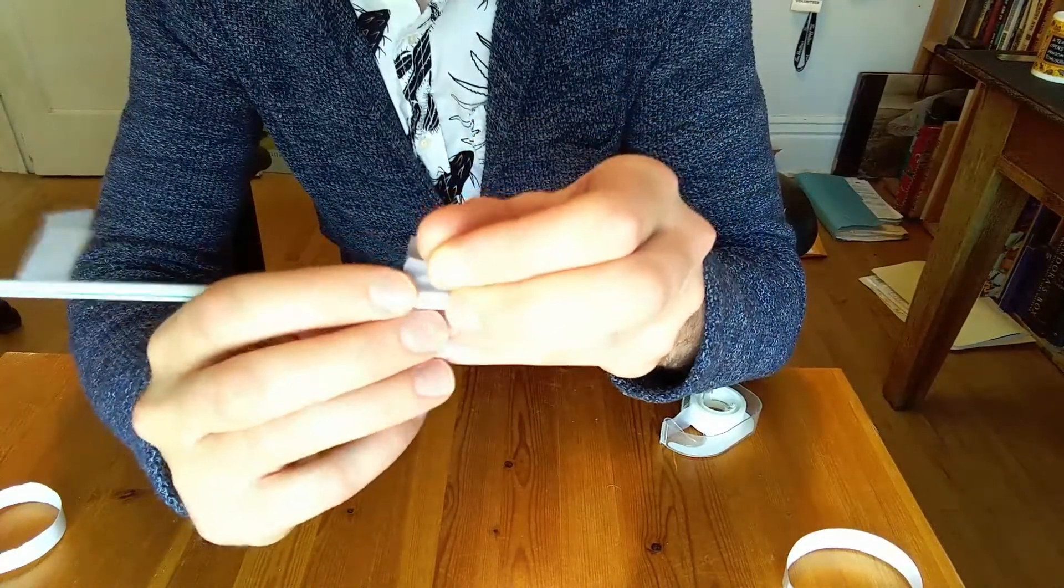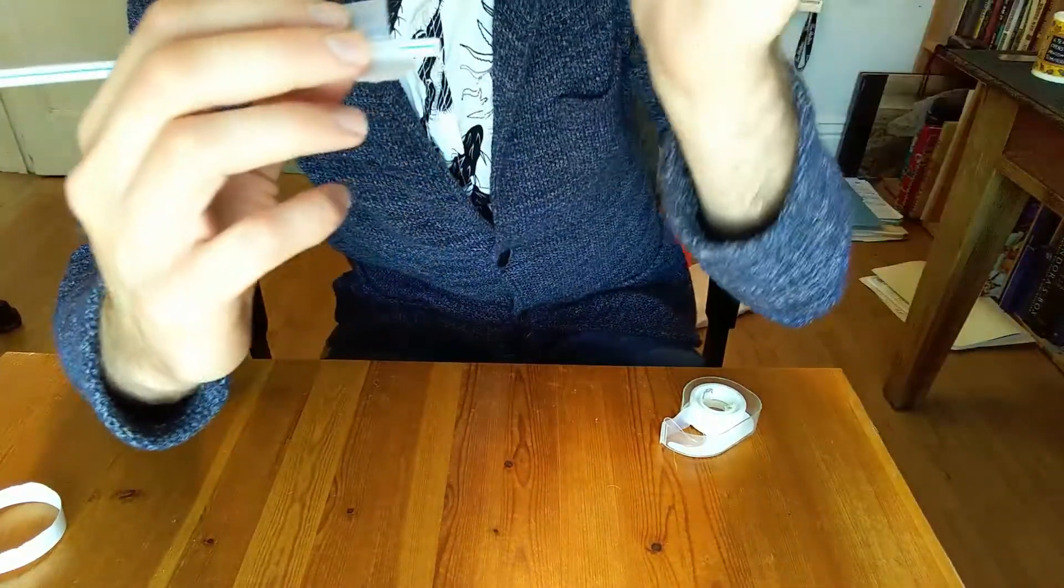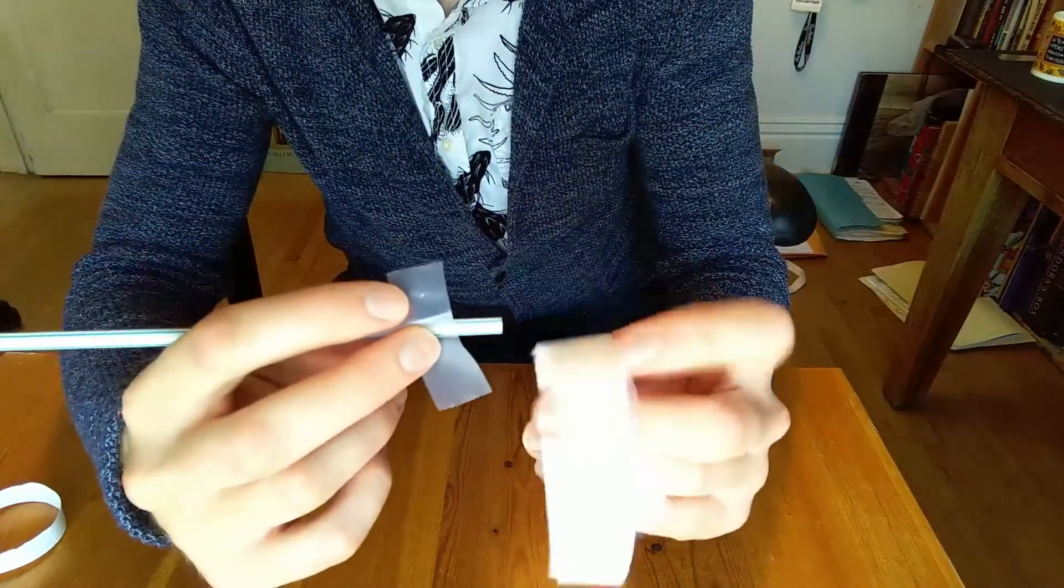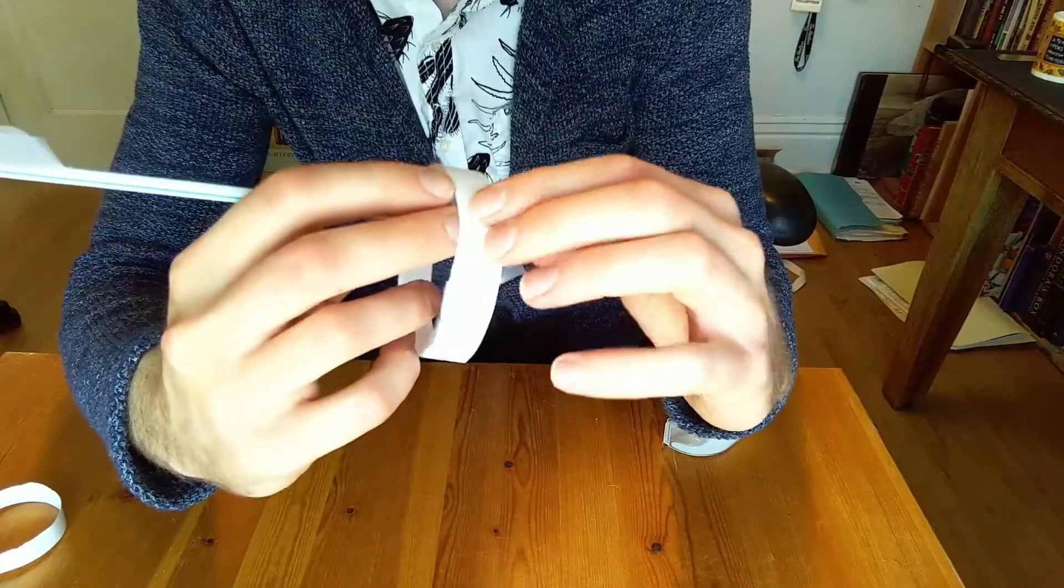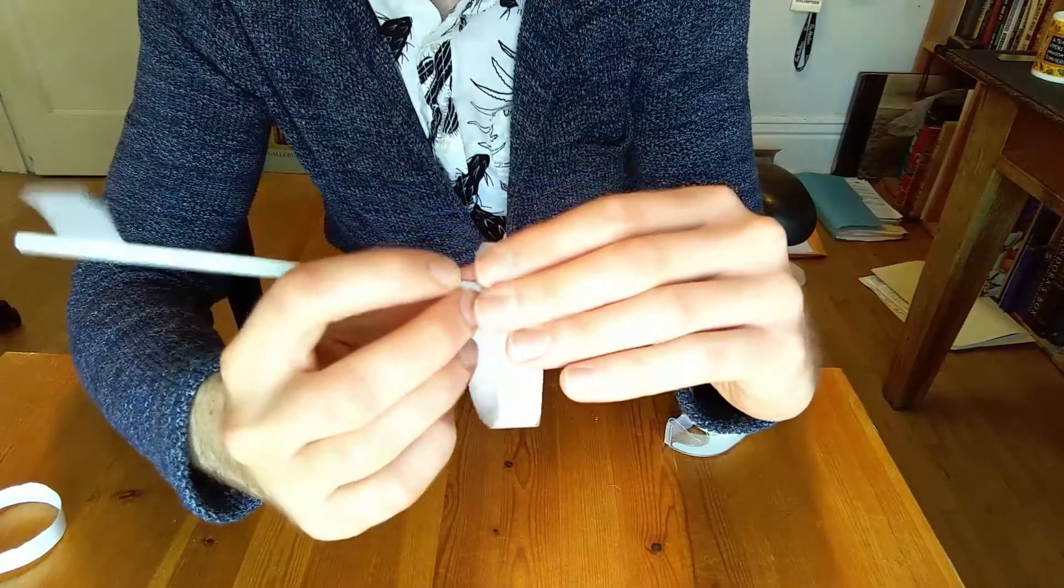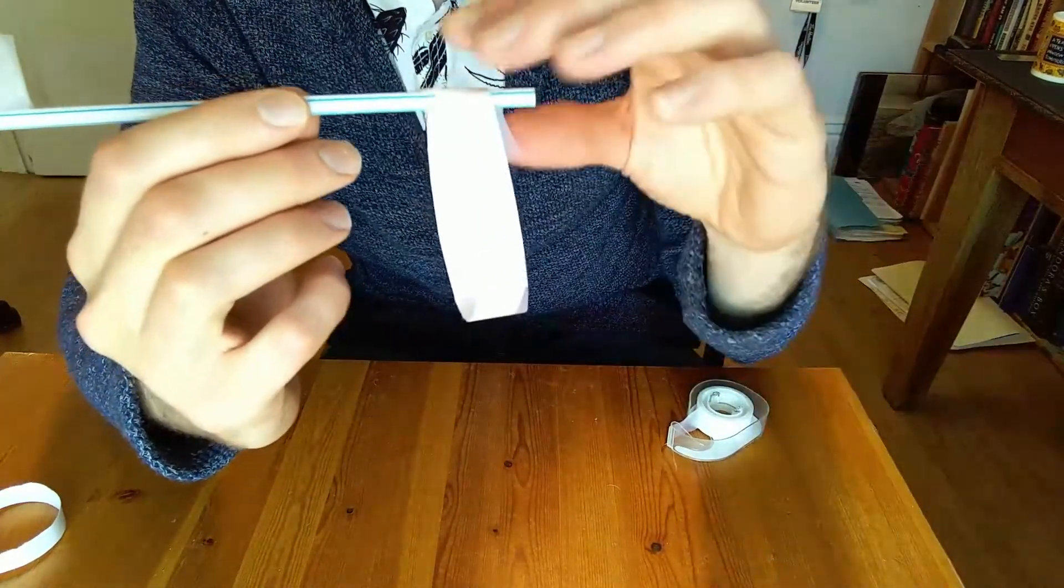Anyways, once you've got your tape looped around to the other side, you want to take one of your loops and stick it on top so that it's taped to the straw.